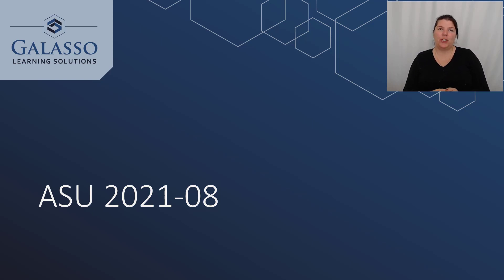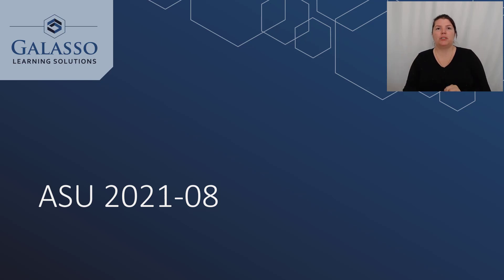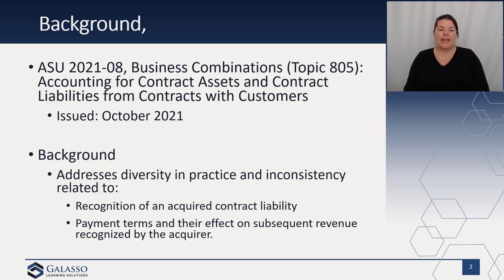ASU 2021-08 addresses a question that was brought up when Topic 606 became effective. A lot of times you update a particular standard, but sometimes the relationship between that and other standards is what gets called into question, which is exactly what we see here. ASU 2021-08 is related to business combinations, and in particular, how do you account for contract assets and contract liabilities from contracts with customers?